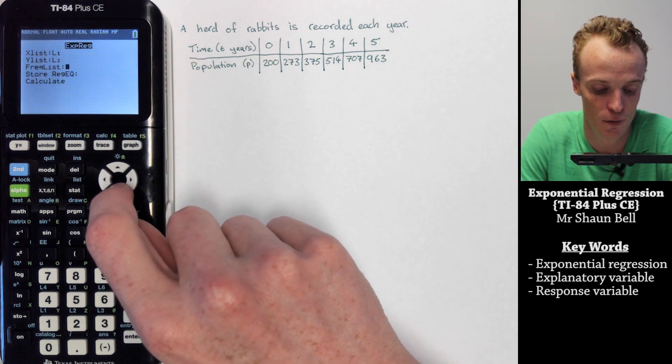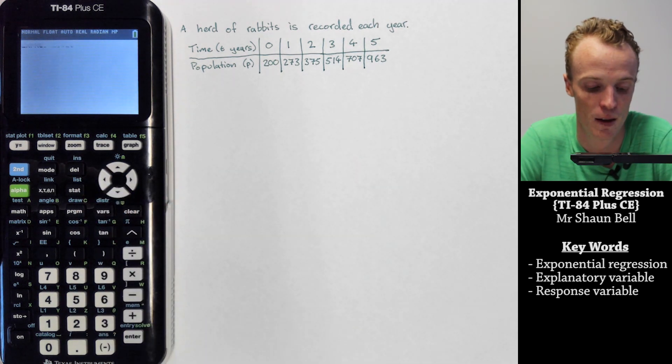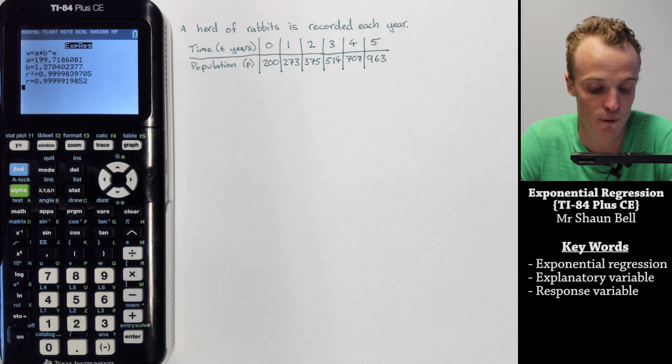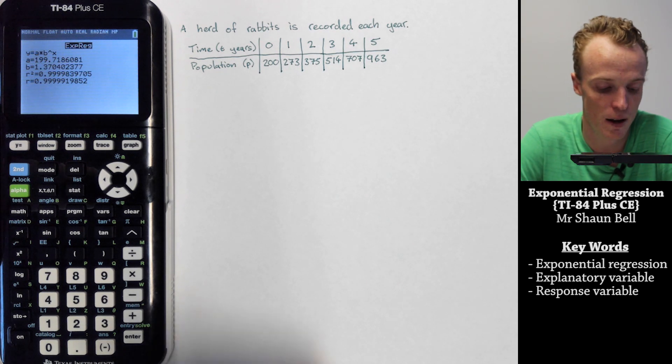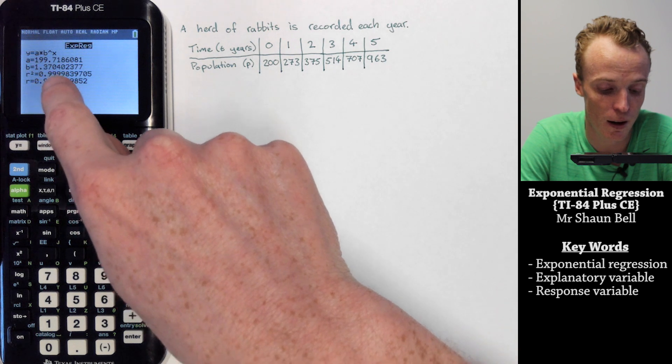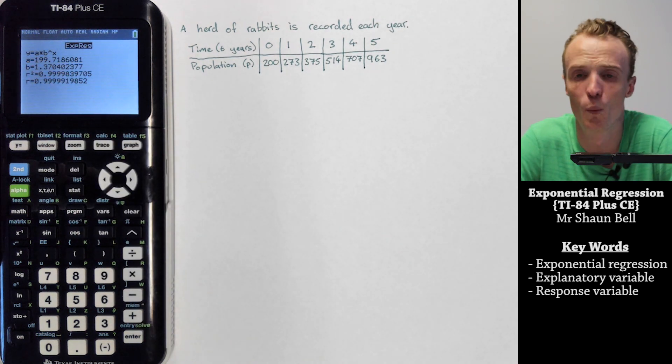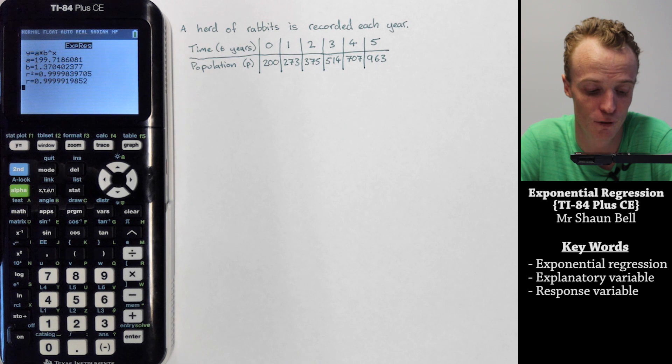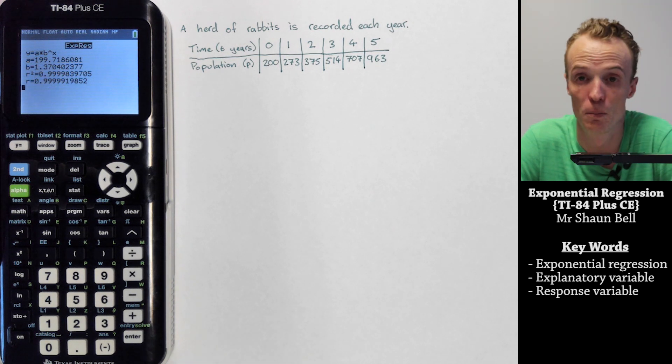Instead I move down to hit the calculate and it will calculate the values for the exponential regression model along with my R and R squared values. As you can see here, my R and R squared are almost 1, which means it's an almost perfect fit for this model.